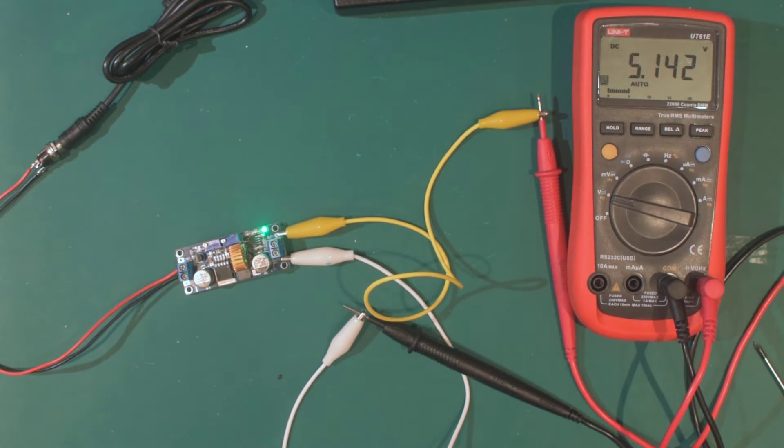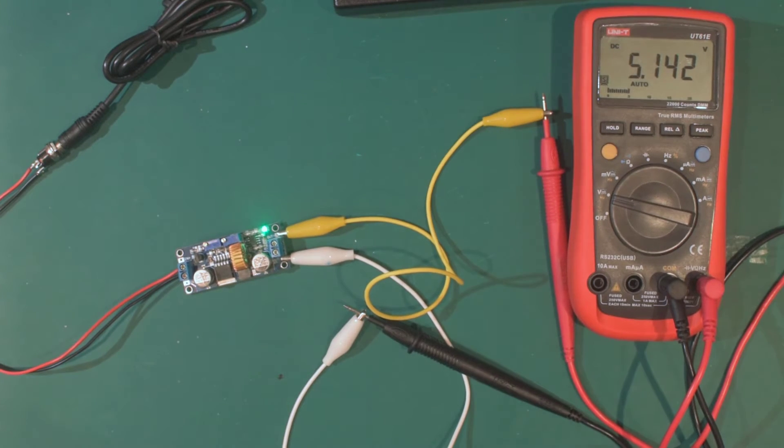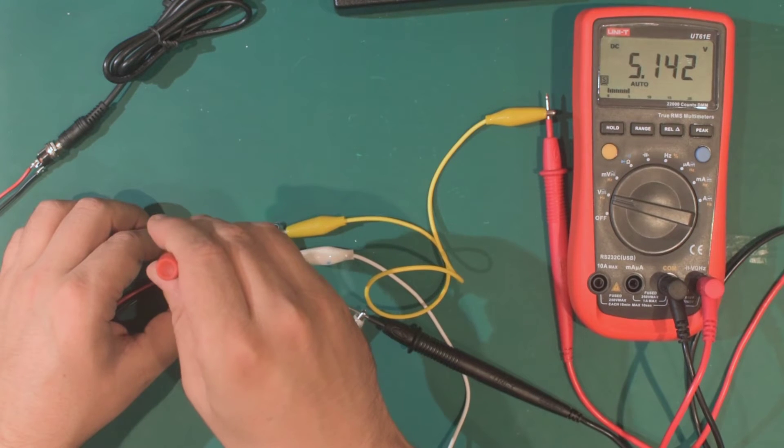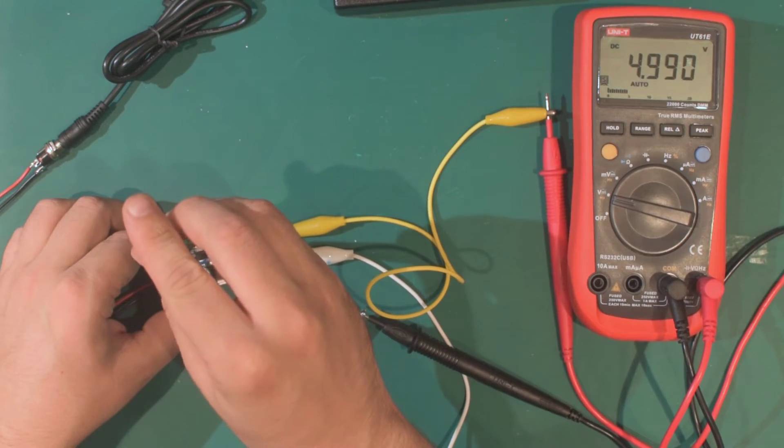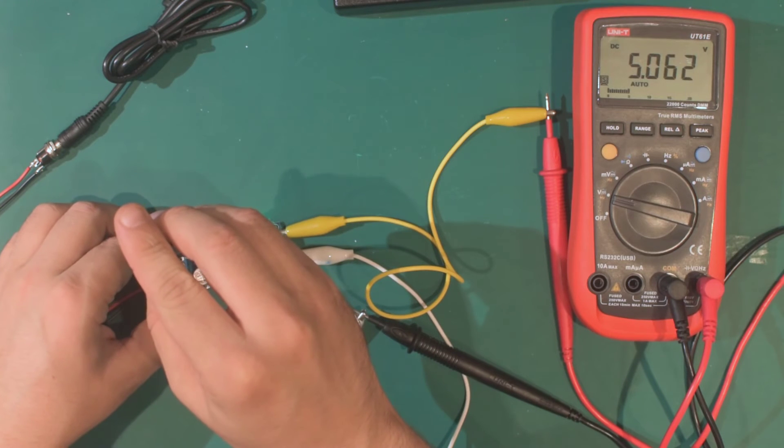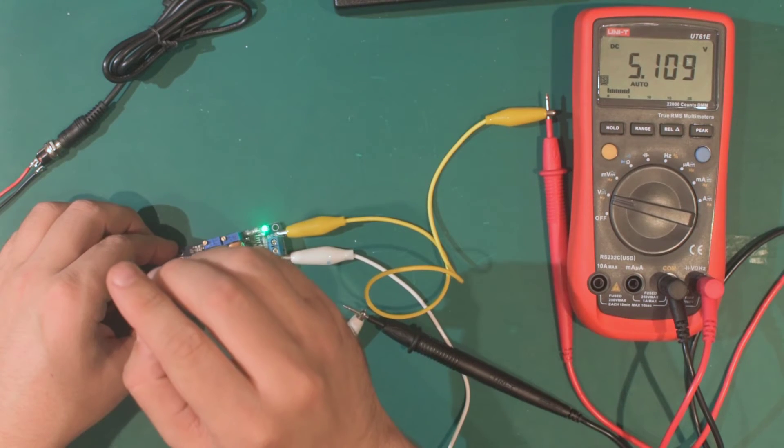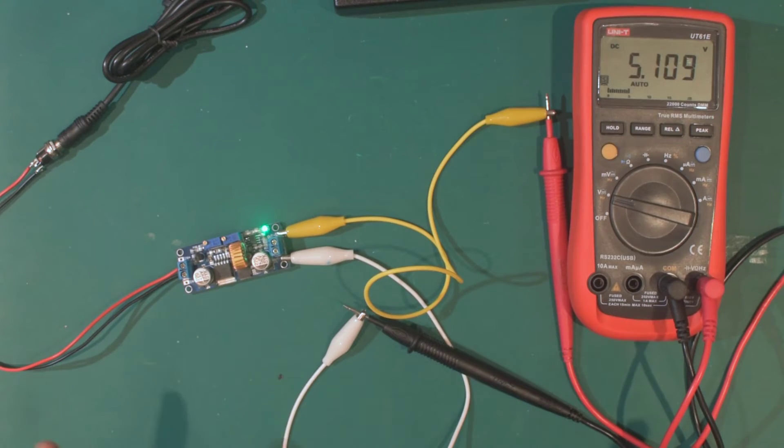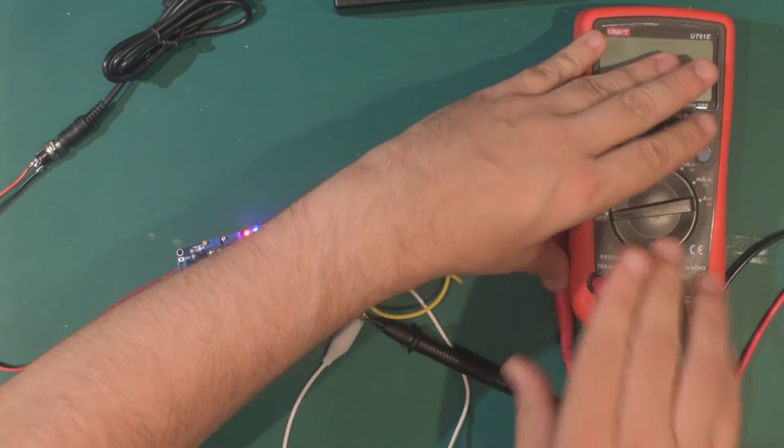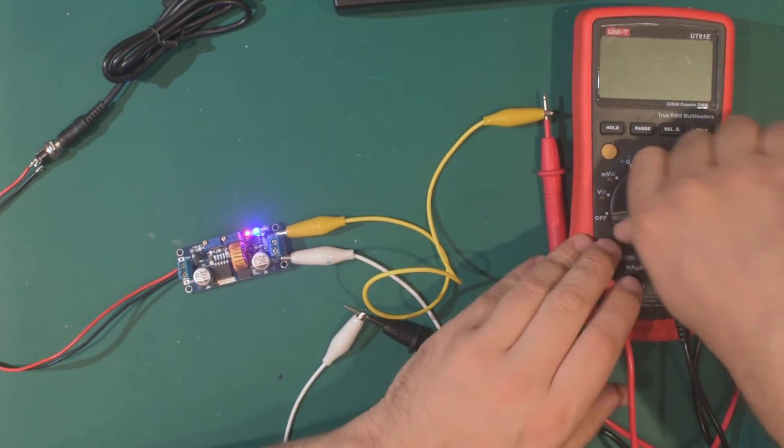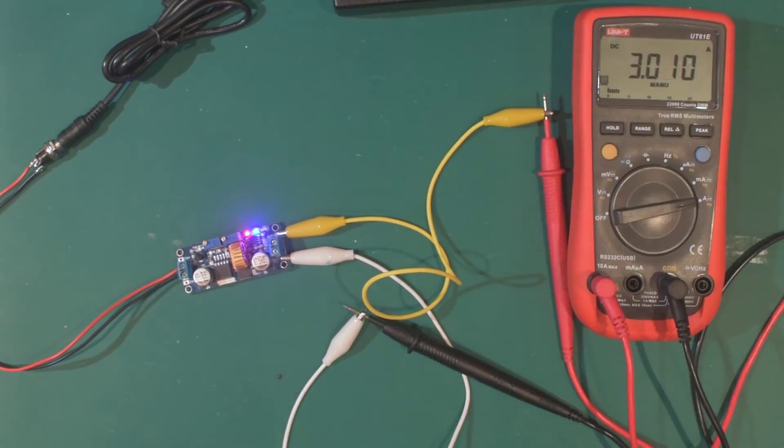There we go, a bit of a dodgy connection. So 5.14, that's not too bad. Let's just trim that down slightly using the voltage pot. That'll do, 5.1. And now I need to switch to 10 amp range and see how much current. So it's currently set to 3 amps. That will actually do.